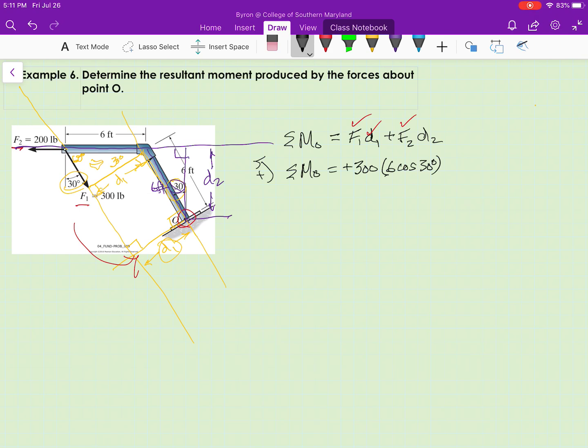I look at F2 with respect to O and see that it's also trying to cause a counterclockwise rotation around point O. So it's going to get a positive sign. Magnitude of F2 is 200. And D2 is also 6 cos 30.